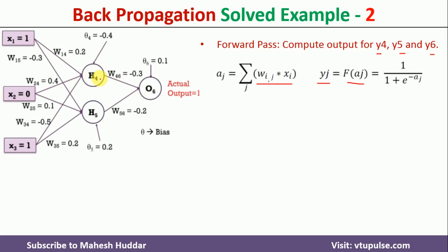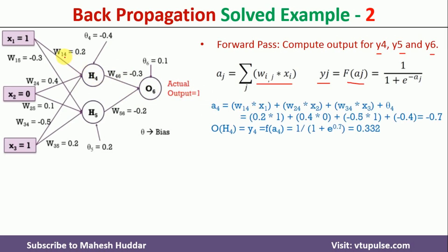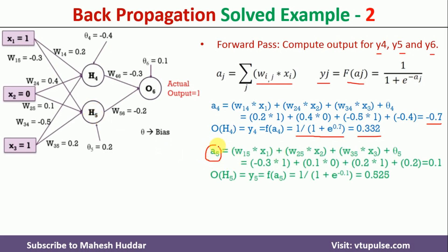First, we calculate the output at h4. The summation term a4 is: w14·x1 + w24·x2 + w34·x3 + theta4, which gives a4 = −0.7. The sigmoid term is 1 divided by (1 + e^(−aj)), so the output at h4 is y4 = 1/(1 + e^(0.7)) = 0.332. Similarly, the summation term a5 = 0.1, and the output at h5 is y5 = 0.525. These two values y4 and y5 are then given as input to o6.